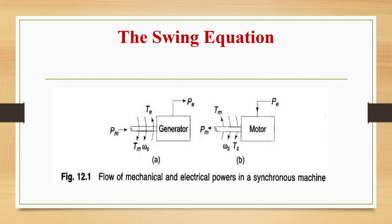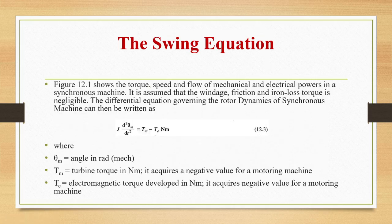A very important concept is the swing equation. A diagram shows the flow of mechanical and electrical powers in a synchronous machine. For a generator, mechanical energy (Pm) is the input and electrical energy (Pe) is the output. For a motor, electrical energy (Pe) is input and mechanical energy (Pm) is output. Windage, friction, and iron loss torques are assumed negligible. The differential equation governing rotor dynamics is J·d²θm/dt² = Tm − Te, where θm is the angle in radians, Tm is the turbine torque in Newton-metres, and Te is the electromagnetic torque in Newton-metres.